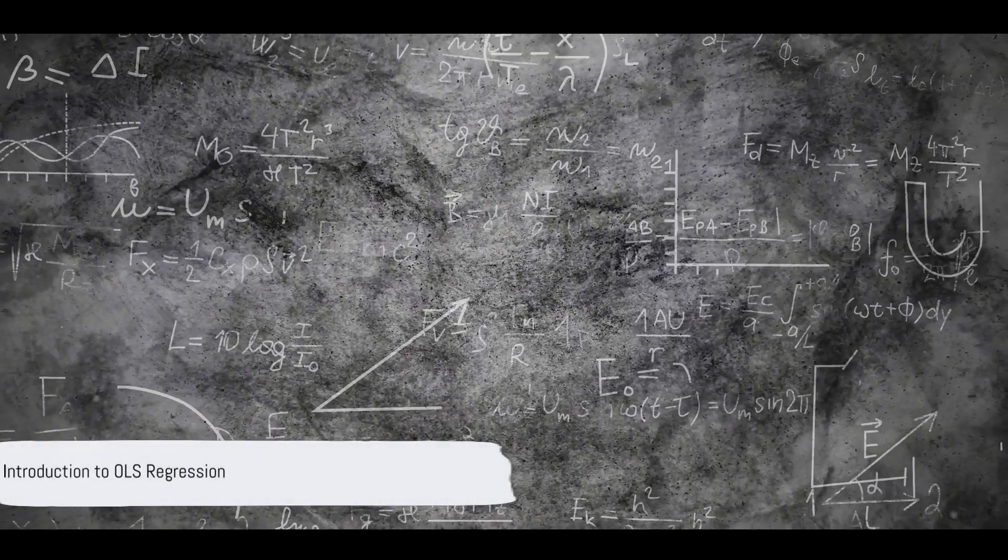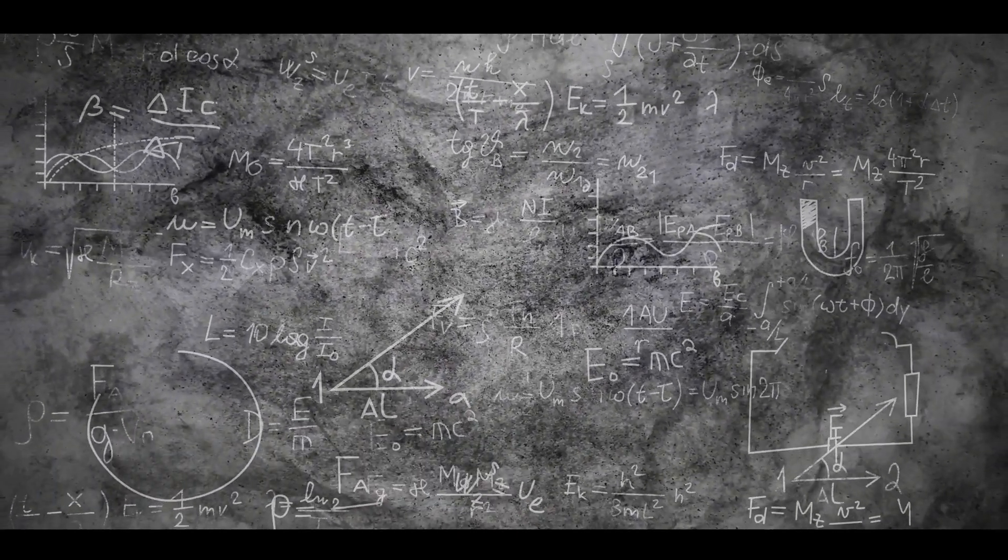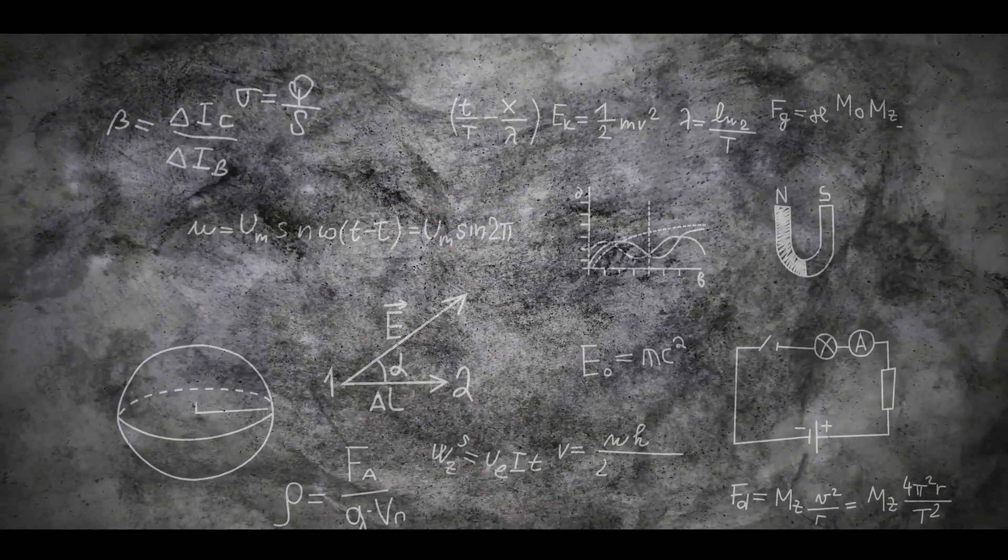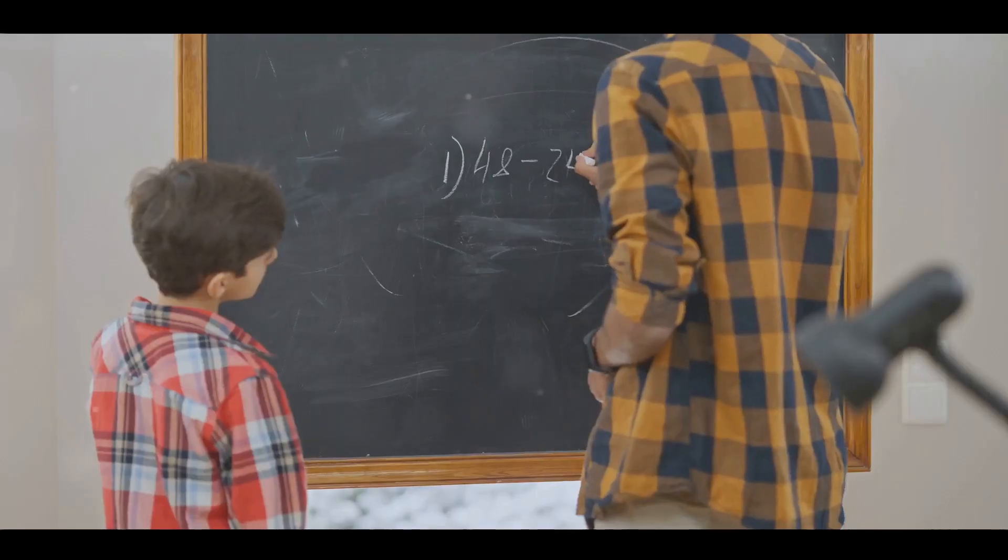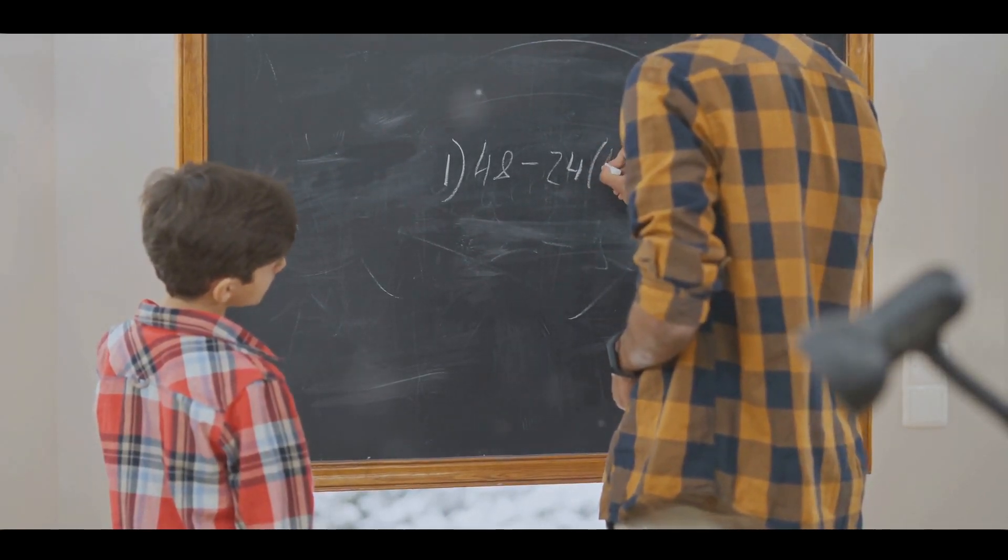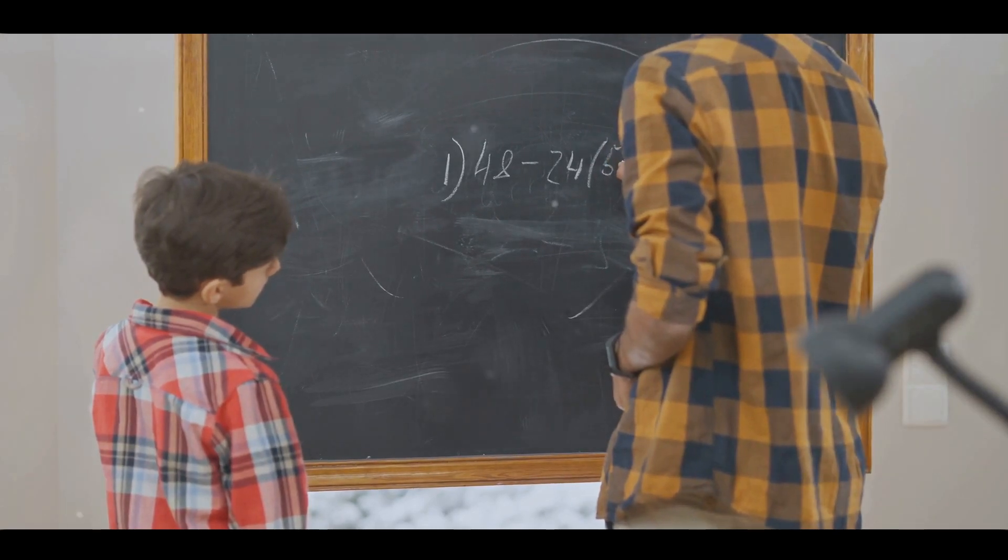Ever wondered how machine learning algorithms make accurate predictions? Well, it all boils down to a fascinating process called Ordinary Least Squares Regression, or OLS regression for short. Today, we're going to unravel this concept in a step-by-step manner.